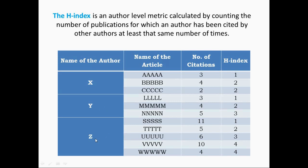In the third example, author Z published article S cited 11 times — H-index is 1. Article T cited 5 times — H-index is 2. Article U cited 6 times — H-index is 3. Article V cited 10 times — H-index is 4. The fifth article W has only 4 citations, so the H-index remains 4, because not all 5 articles have 5 or more citations.